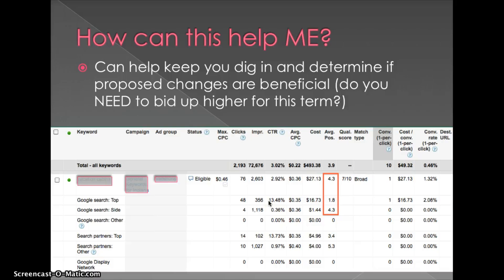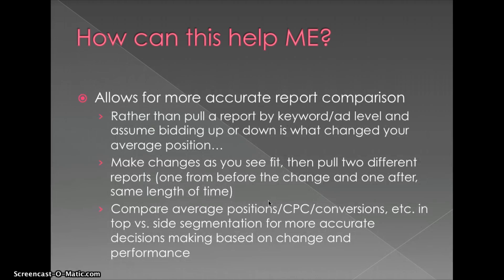With this particular keyword — vacation cabins — my average position is 4.3. I know I perform better when keywords show up in the first three positions, so previously I would have thought to bid this up and check back later. Now I can actually split it out and analyze separately top versus side and see if I'm getting conversions from one place and not the other — or if based on my budget it's better to bid to the side. This allows for more accurate report comparison, pulling reports from two different time periods before and after a bid change to see if your actual position changed.